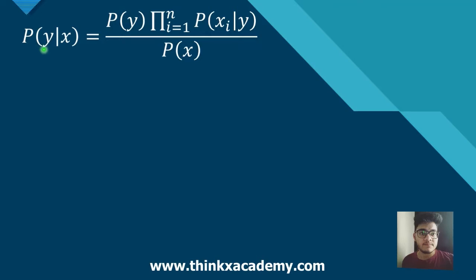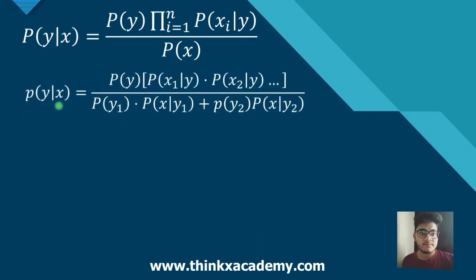So this formula says that the probability of Y given X equals the probability of Y, and this is basically a product from i equals 1 till N, which gives the probability of Xi given Y, divided by the probability of X. I have used the concept of the total probability theorem to expand the probability of X as probability of Y1 multiplied by probability of X given Y1, plus probability of Y2 multiplied by probability of X given Y2, where Y1 and Y2 are two different classes. If we have N classes, we will add them like that.